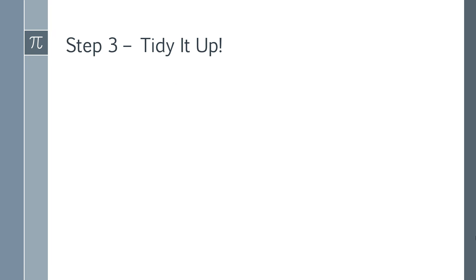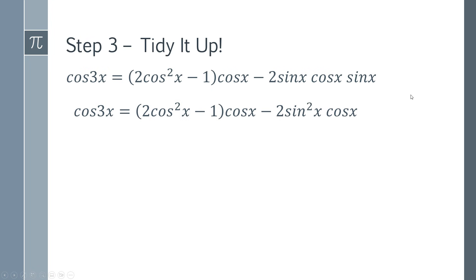The next step is we need to tidy up this expression. So we've got this expression here, and obviously we've got things that need to be multiplied out and things that need to be combined. So we can multiply this one out here. So you've got 2 cos squared x multiplied by cos x, and you've got the minus 1 multiplied by cos x. And then here you've got a sin x and a sin x, so that's going to give you a sin squared x.